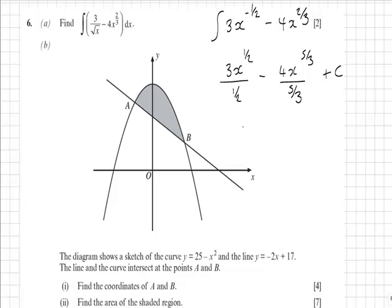Make it look a bit nicer. We could divide the fraction by inverting and multiplying, so that would give us 6x to the power of a half minus 12x to the 5 thirds over 5 plus c.